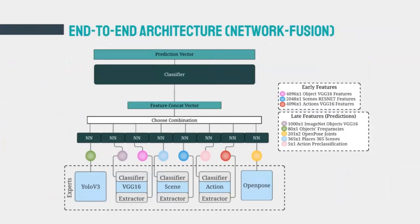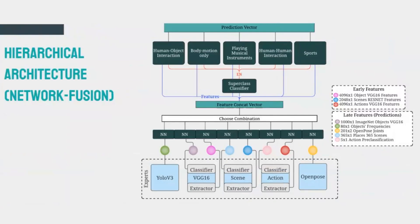For example, this is the end-to-end architecture with the feature extraction component replaced by the network fusion approach we just described. We can also include it in our hierarchical architecture — this is the hierarchical architecture with the same component replacing the feature extraction and selection component.